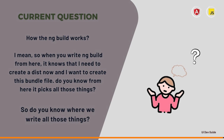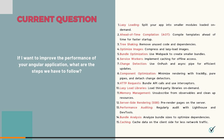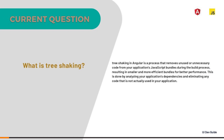If I want to improve the performance of an Angular application, what steps do we follow? For performance, one thing is lazy loading. And tree shaking is there in production. Tree shaking is basically when we build the application — it removes all unnecessary packages so only what is needed remains.